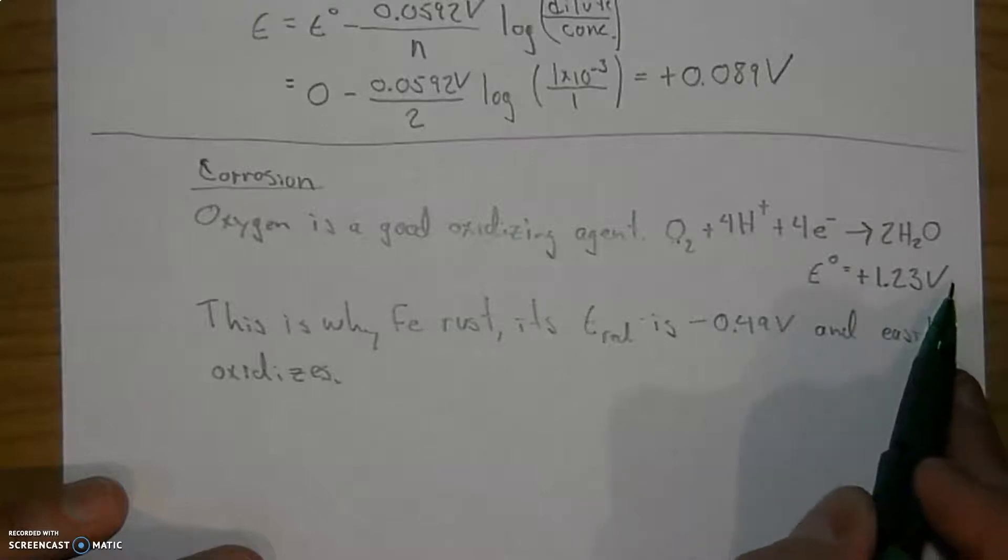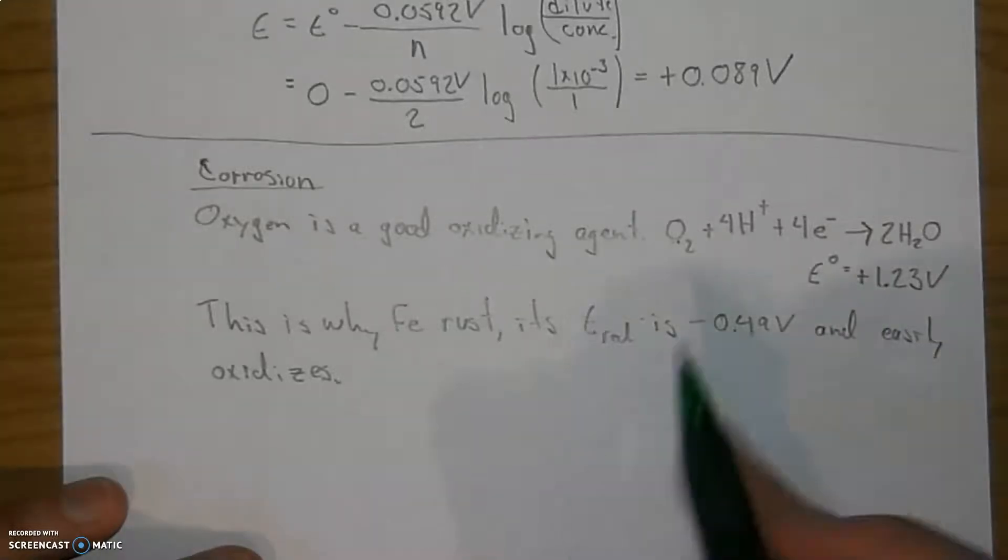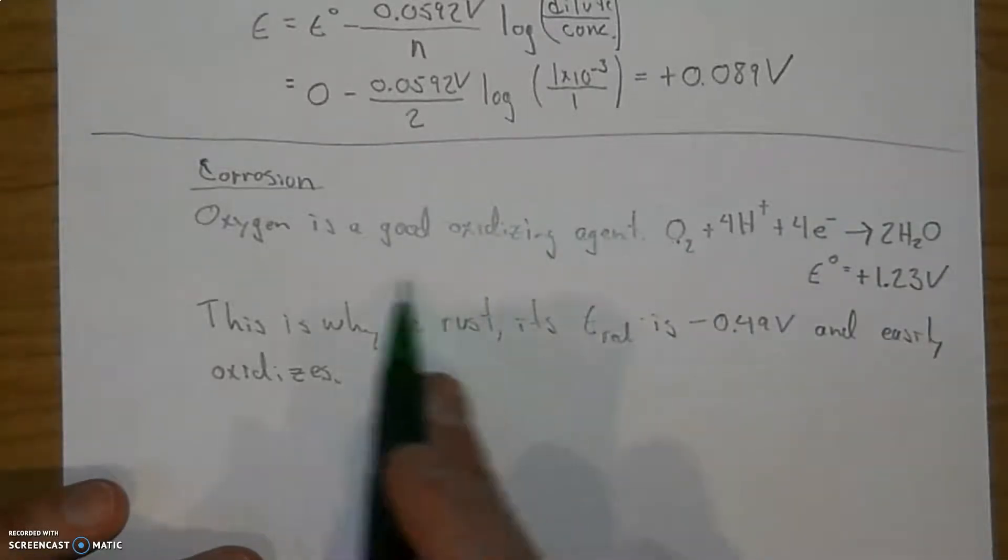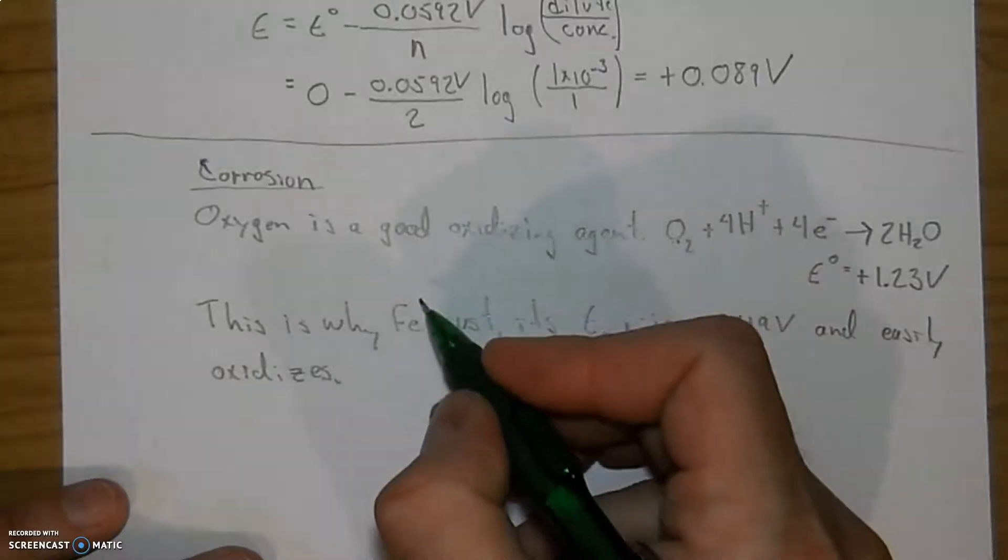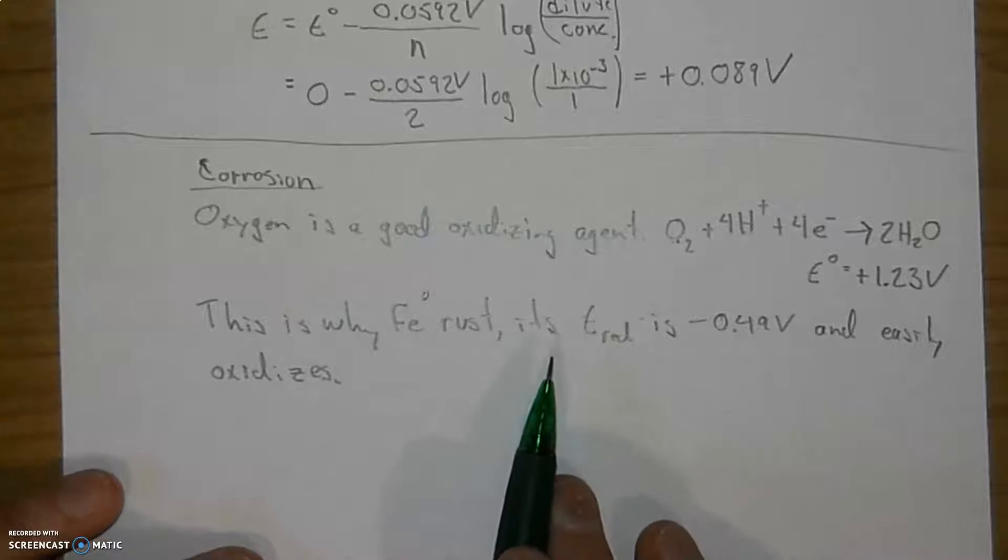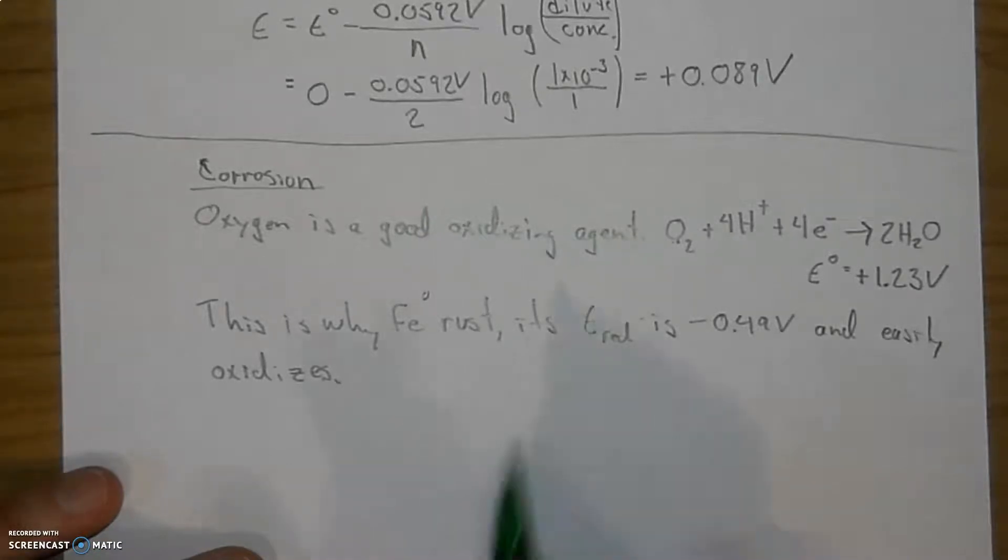So when you're putting it into an equation, remember the more positive value comes first in a spontaneous reaction. So you have this positive value minus a negative value, you get a very positive result, meaning it's spontaneous, it happens. Which is why solid metallic iron with an oxidation value of zero goes through this process very, very well as far as losing electrons.